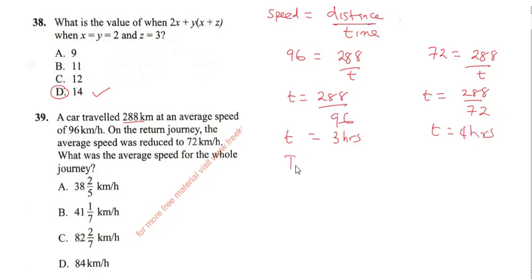Now the next thing you're going to do is you get your total time for the journey. Now total time will be 3 plus 4 and that's going to give us 7 hours.